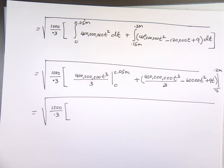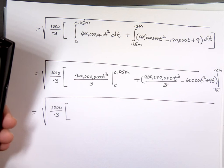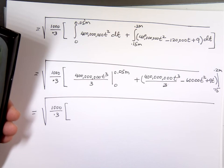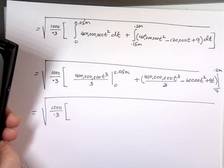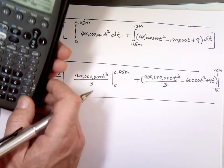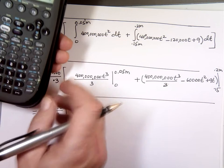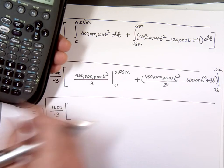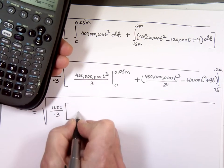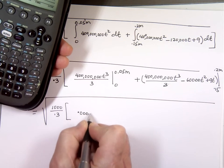400 million times (0.05 EE negative 3) to the power of 3, divided by 3. I came up with 0.000017 for this first piece. Double-check with your calculator, because nobody's worse than me with calculators.